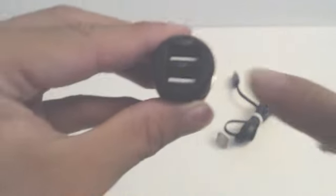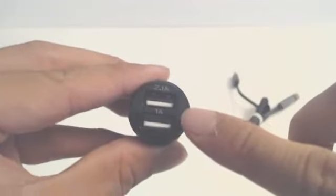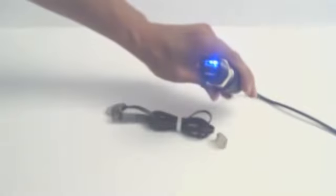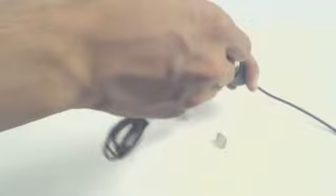The top USB port outputs up to 2.1 amps and the bottom port outputs 1 amp. So just note that if you have a high powered consuming device, it will charge faster in the top port than in the bottom one.